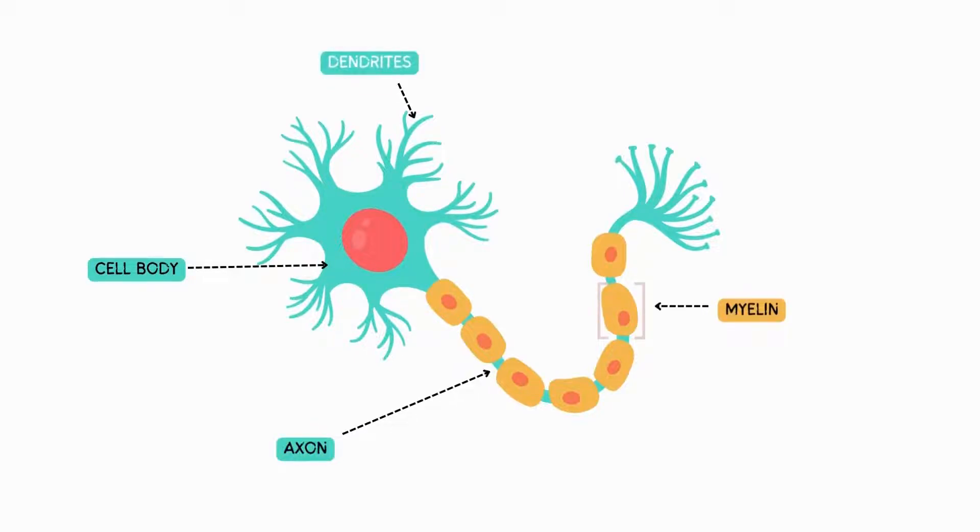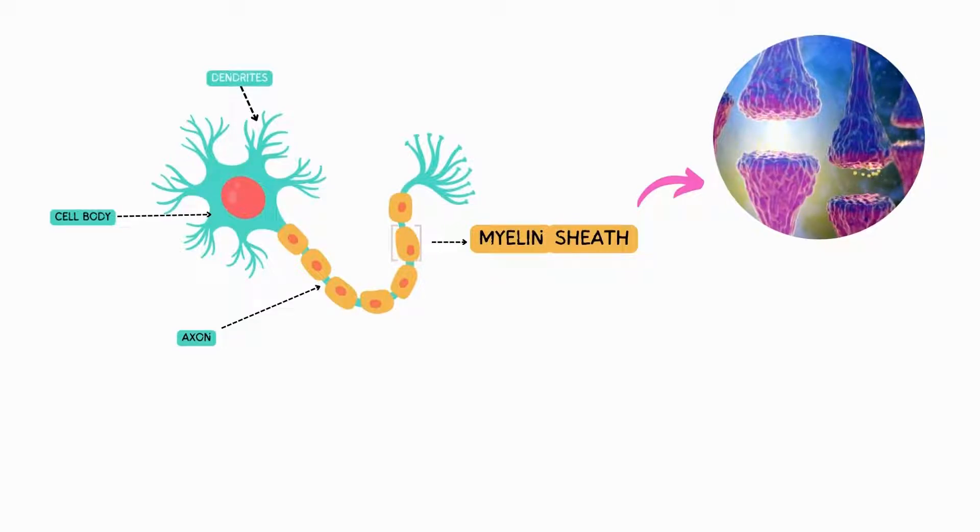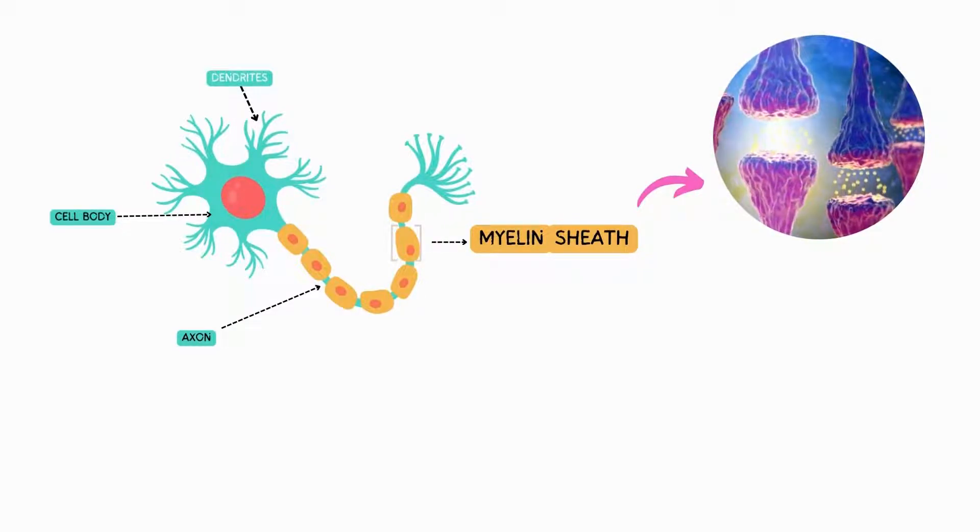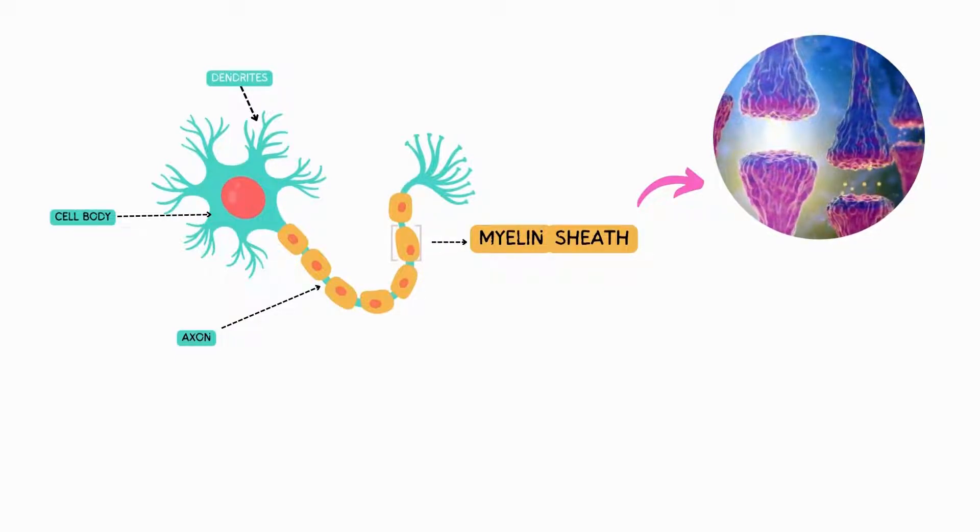Myelin is an insulating layer or sheath that forms around nerves, including those in the brain and spinal cord. It is made up of protein and fatty substances. This myelin sheath allows electrical impulses to be transmitted quickly and efficiently along the nerve cells. If myelin is damaged, these impulses slow down.